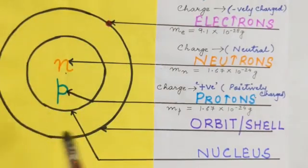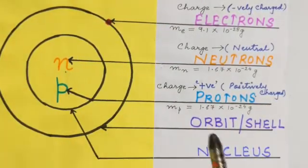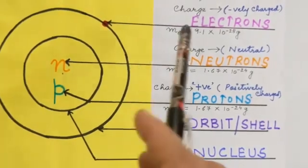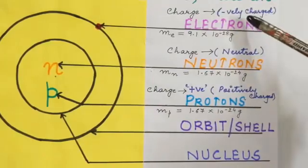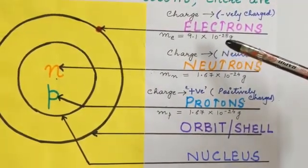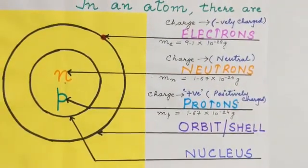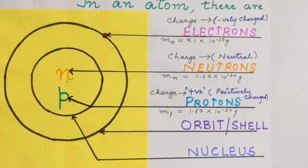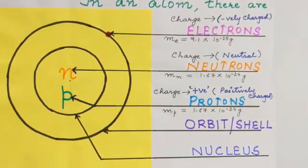Outside the nucleus, we have orbits, which are also known as shells or energy levels. These shells or energy levels have electrons in them. Electrons carry a negative charge and have a mass of 9.1 into 10 to the power of minus 24 grams. Therefore, an atom consists of basic subatomic particles: electrons, protons and neutrons.